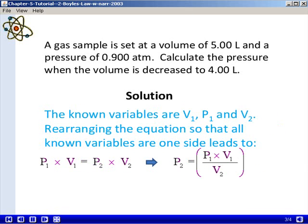In this problem, we know three variables: we know the initial volume, the initial pressure, and the final volume. We need to rearrange our equation so that all of the known variables are on one side, so we can solve for our unknown variable, which is the final pressure.